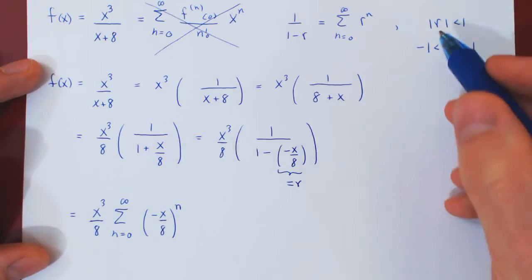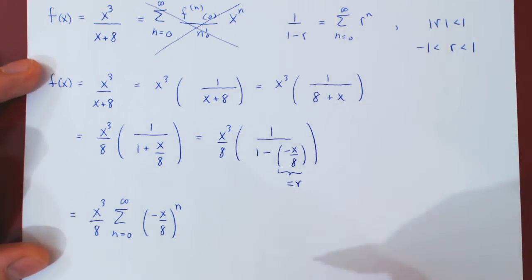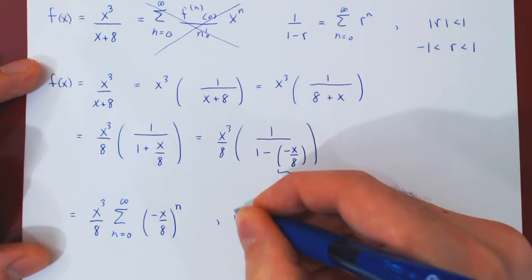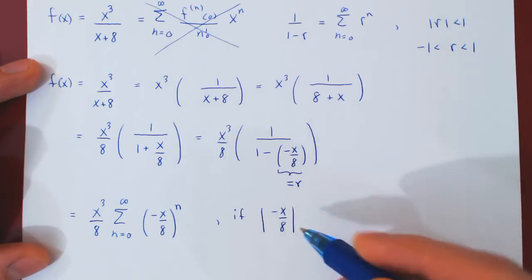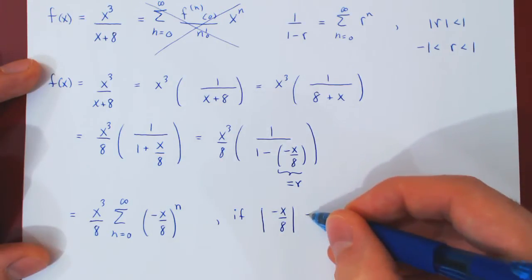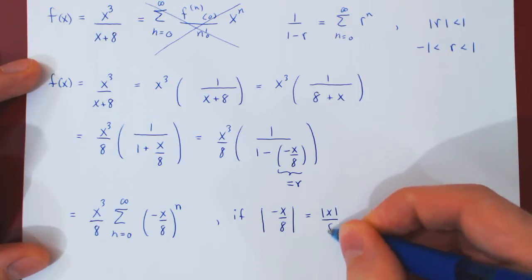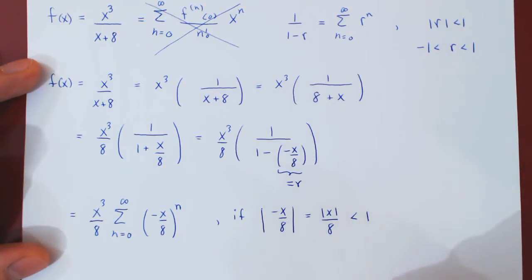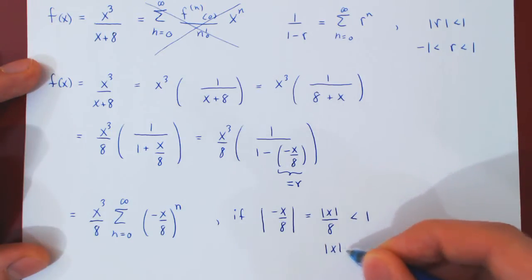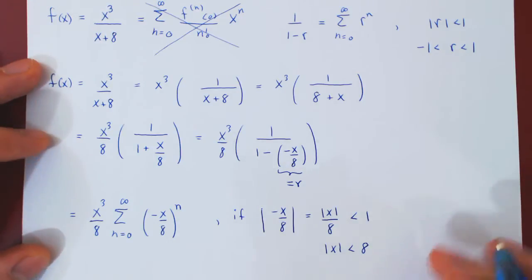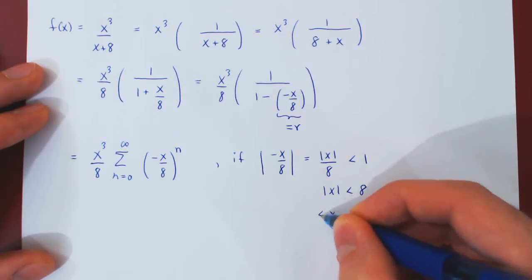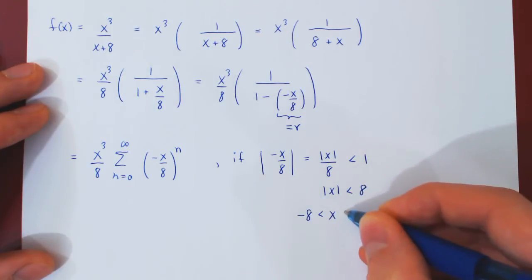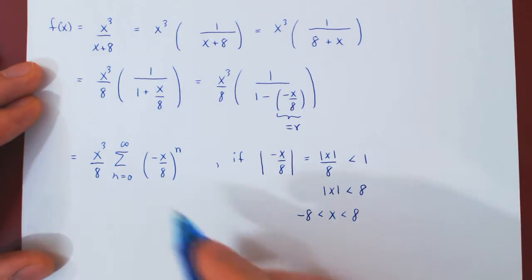This, of course, is only valid if the absolute value of r is less than 1. So if the absolute value of negative x over 8, well, the absolute value will kill the negative, so this is the same as absolute value of x over 8 as 8 is positive, is strictly less than 1. And I can rearrange, multiply by 8, if the absolute value of x is less than 8, which is the same as saying that x lies between negative and positive 8.